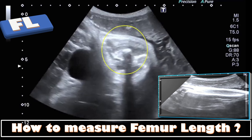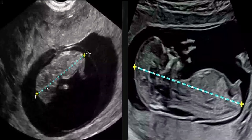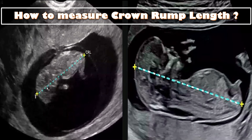Measure the femur from one end to another, excluding the trochanter. That is how we measure the femur length. For crown rump length, the measurement should be taken at the mid-sagittal section of the entire fetus. Ideally, the midline facial profile with a nasal bone, spine, genital tubercle, and rump should all appear on a single image.